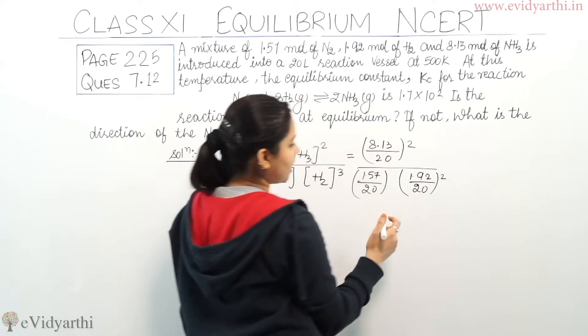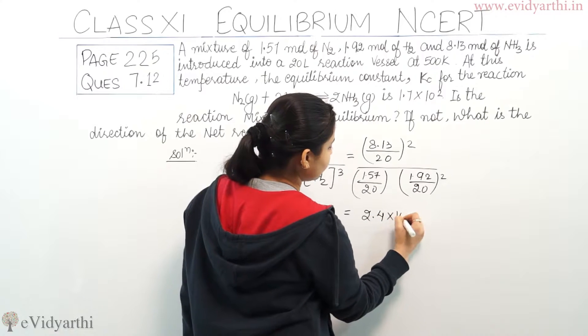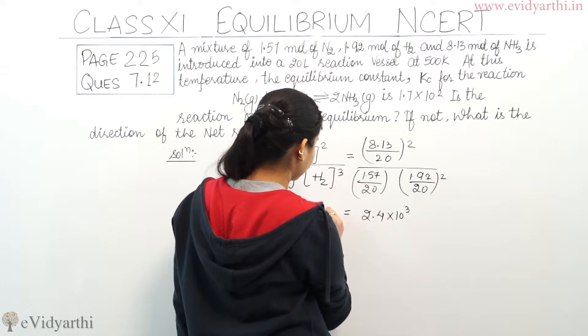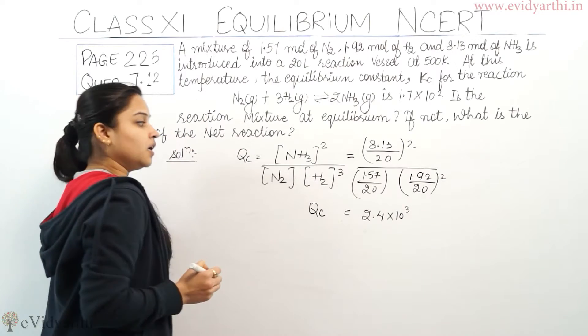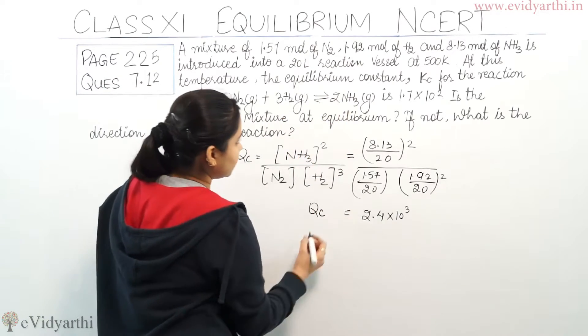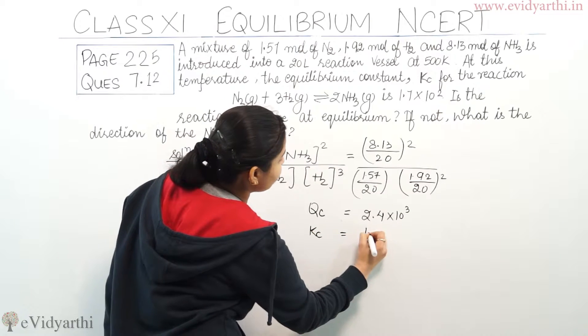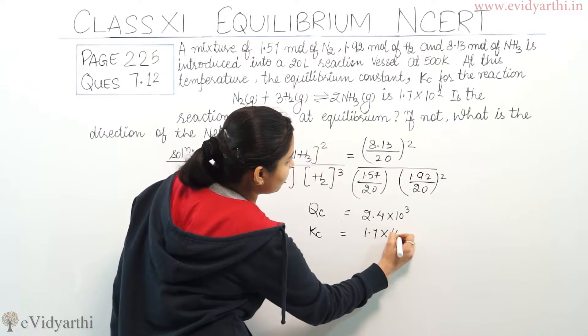So, what we will calculate and you will find it will be 2.4 into 10 raise to power 3. So, the reaction quotient for the equation is 2.4 into 10 raise to power 3. What is the value of Kc given for the reaction? Kc equilibrium constant ki value is 1.7 into 10 raise to power 2.